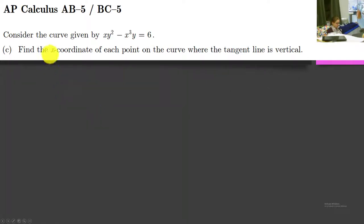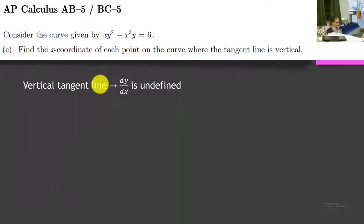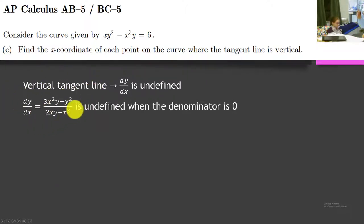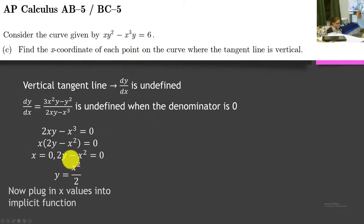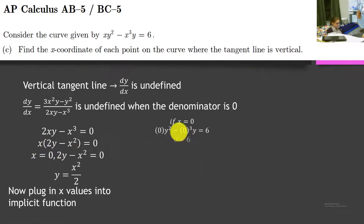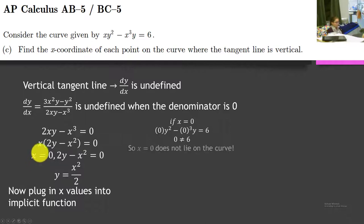Part C: find the x-coordinate of each point on the curve where the tangent line is vertical. A vertical tangent line means the derivative dy/dx is undefined. This fraction is undefined when the denominator equals 0. So we take that denominator, set it equal to 0, factor out an x, and we get x equals 0. We can also set 2y minus x squared equal to 0, giving us y equals x²/2. If x equals 0, we get 0 equals 6, which doesn't make sense — so x equals 0 does not lie on the curve.